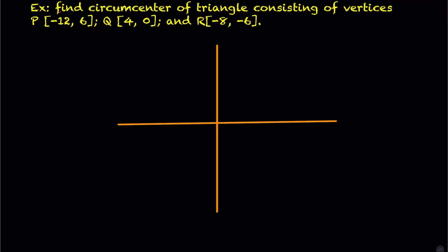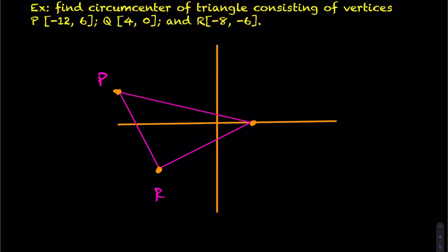Let's go ahead and calculate the circumcenter of a triangle. There's no quick way like there was with the centroid — you can't just average the x's and y's. We have to actually calculate the intersections of the perpendicular bisectors. Let's plot the points: point P is roughly here, point Q approximately here, and point R is somewhere around here. Connecting them gives our triangle. We'll calculate perpendicular bisectors for PR and QR — we only need two to find the circumcenter.